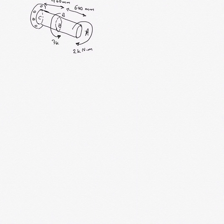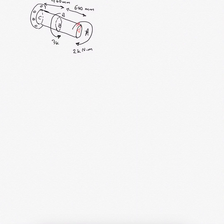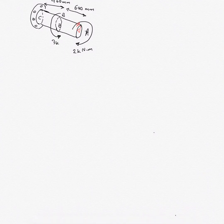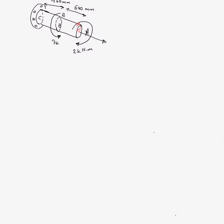Given this torque distribution, what we want to find is the angle of deflection phi at point A. All we need to do first is draw the torque distribution diagram — just like we did for axial load, shear load, and couple moment. We set up a positive x-direction and find the distribution of M(x) with the given sign convention.